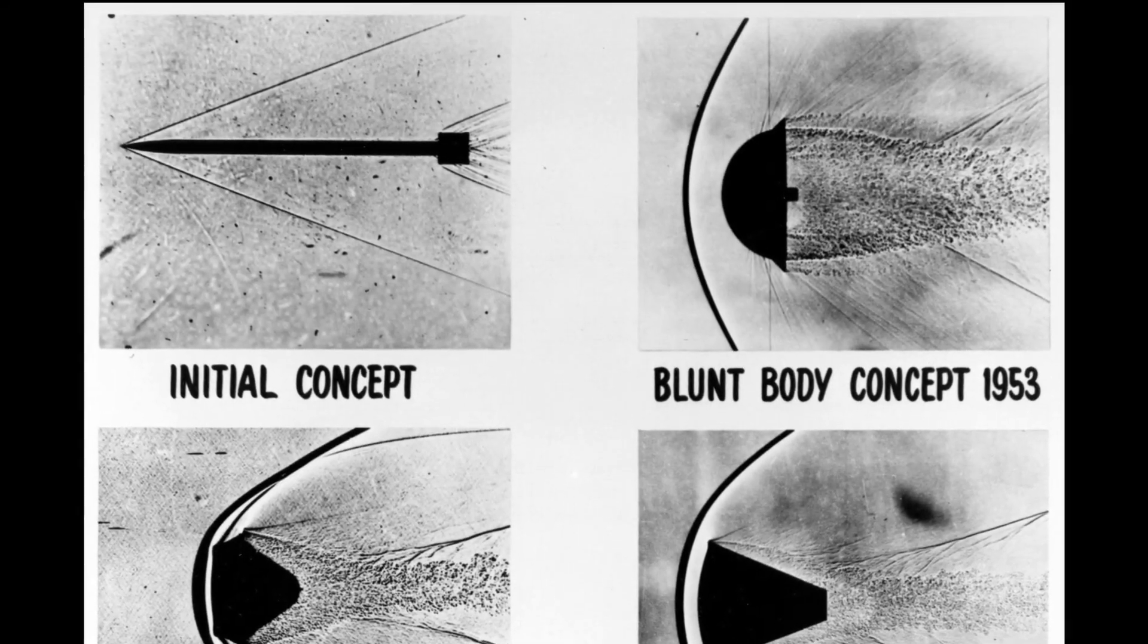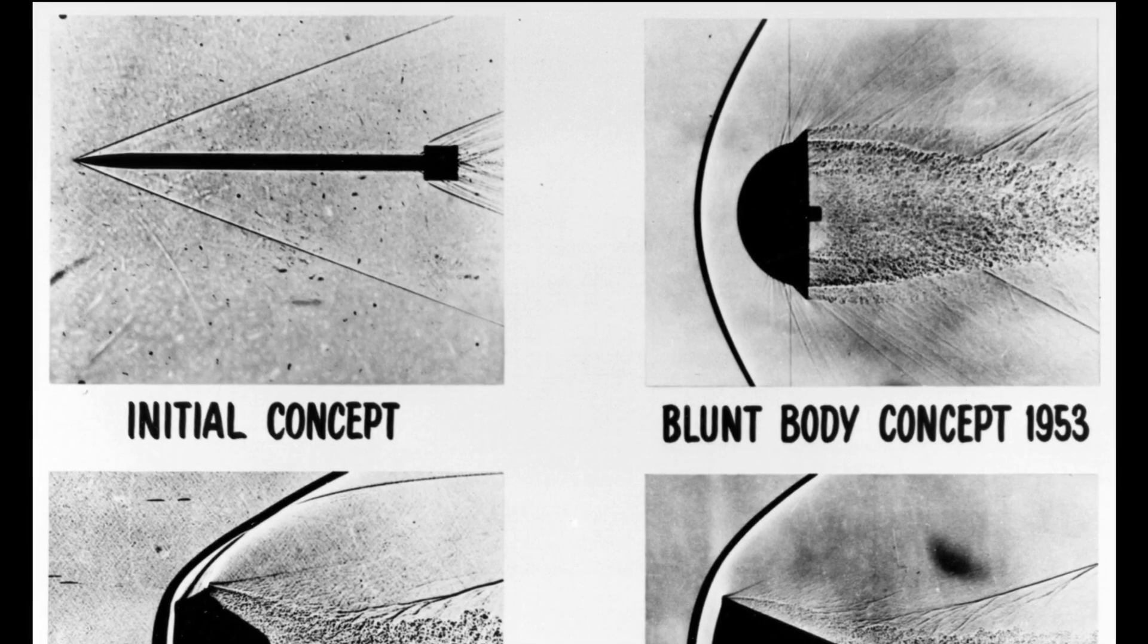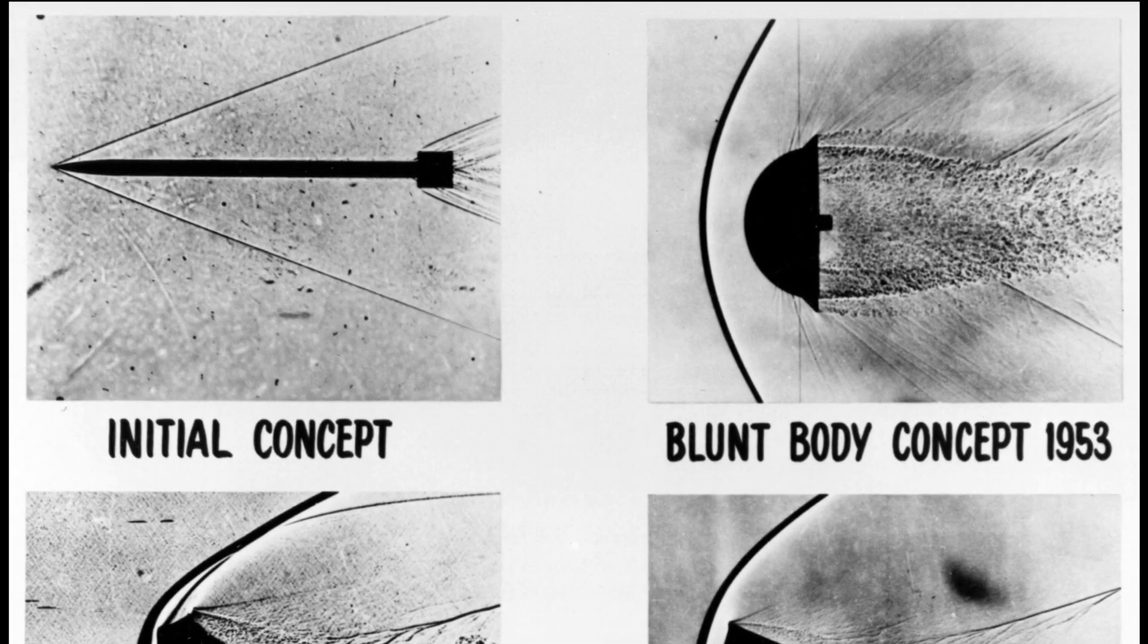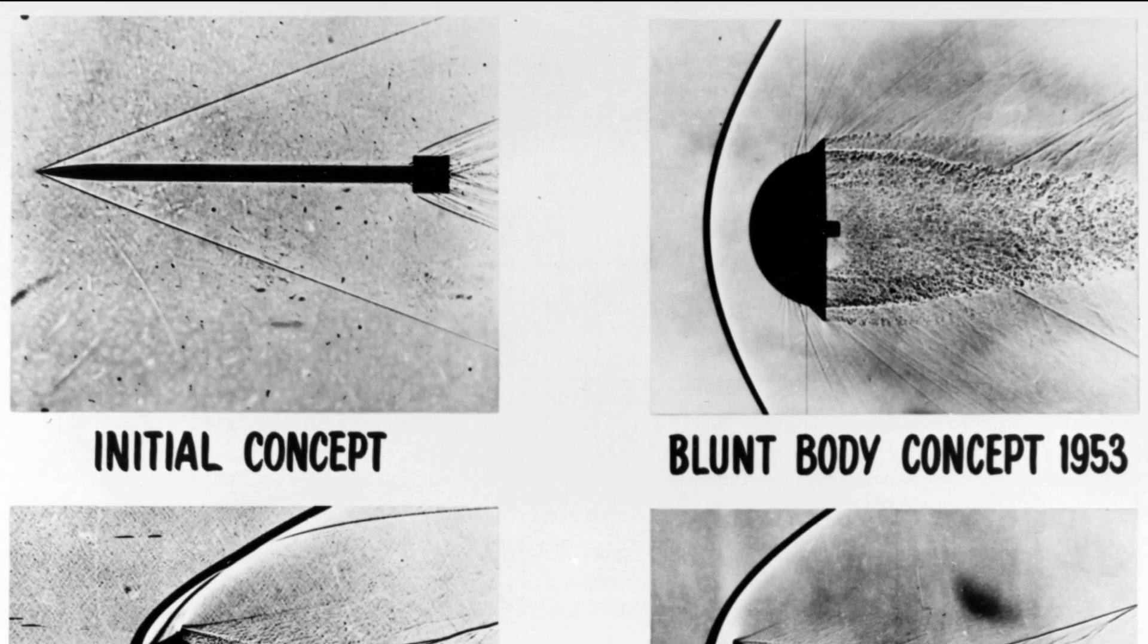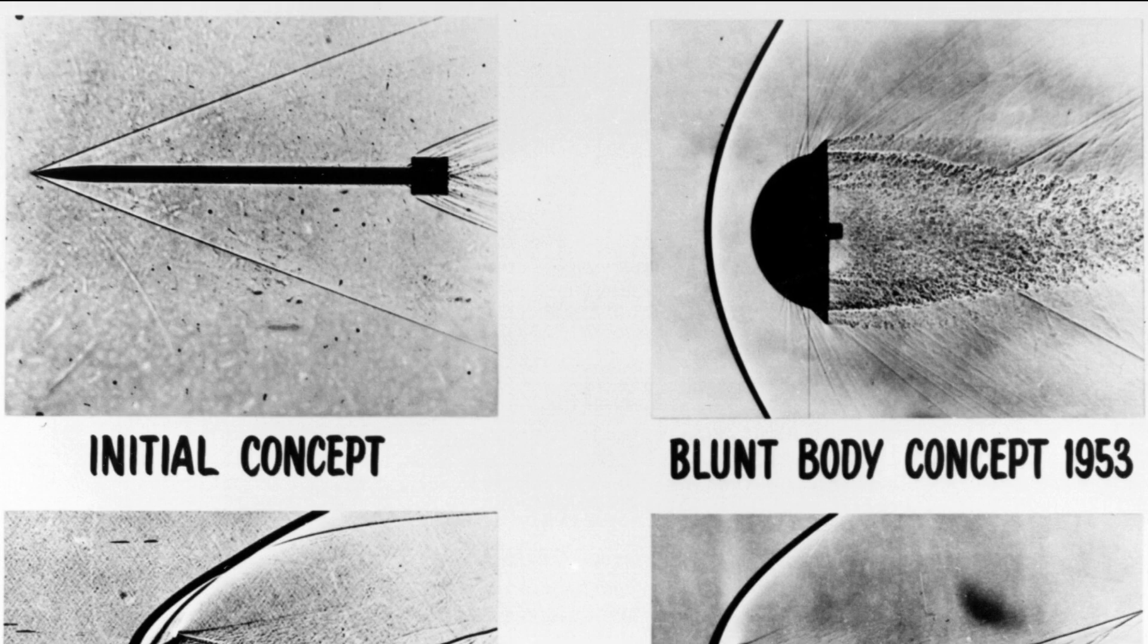Therefore, a very blunt body with a large shock separation distance and large post-shock volume will generate much more thermal radiation than a pointed body under the same conditions. It's worth noting that while the axial shock itself is significantly hotter than the post-shock region, it is incredibly thin and therefore has a negligible volume compared to the post-shock region, and its contribution can generally be neglected.